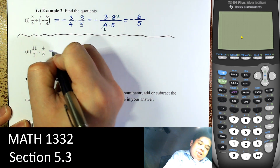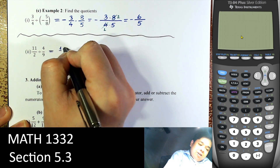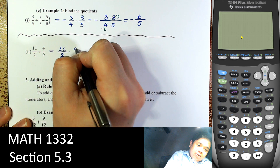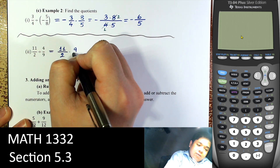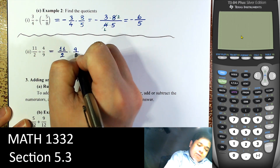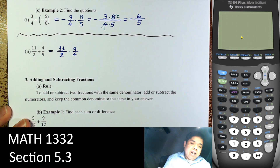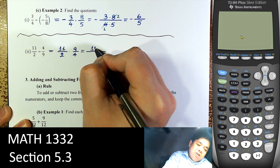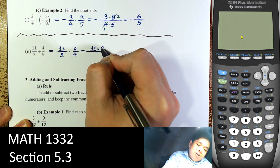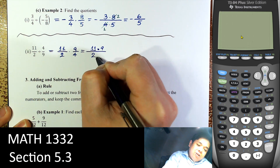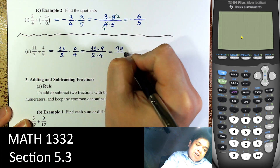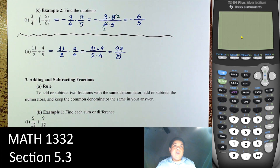Next: flip the second fraction and check if they can simplify. In this case there is no simplification — that should be 99 over 8.